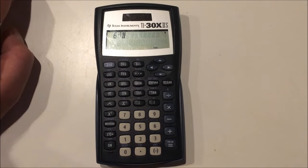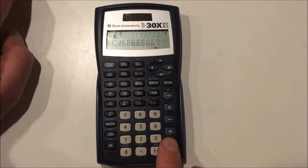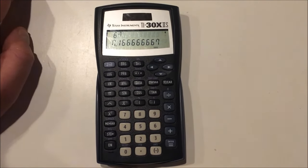For example, 6 to the negative 1 should give us the equivalent of 1 over 6. And that's what this decimal is.